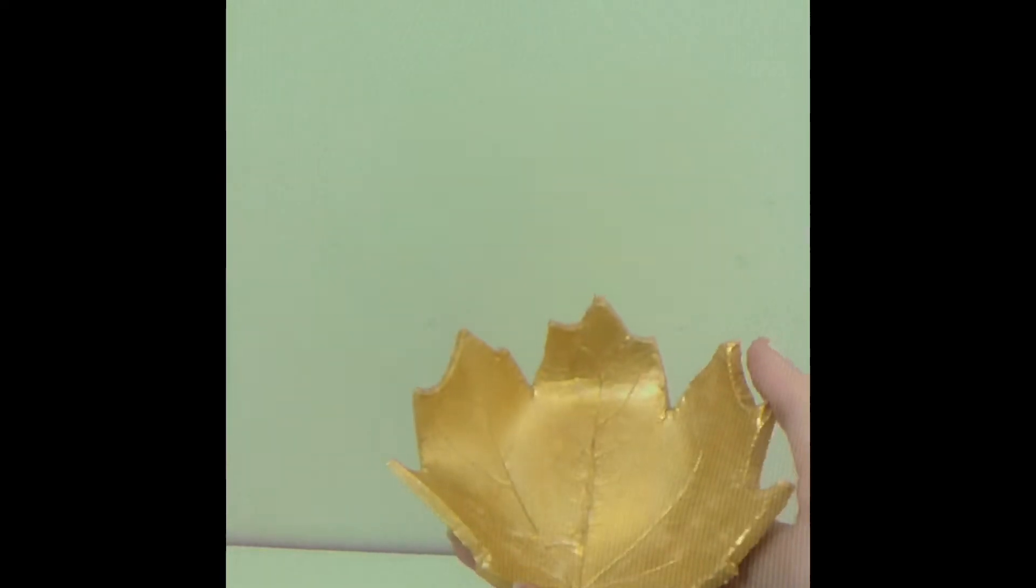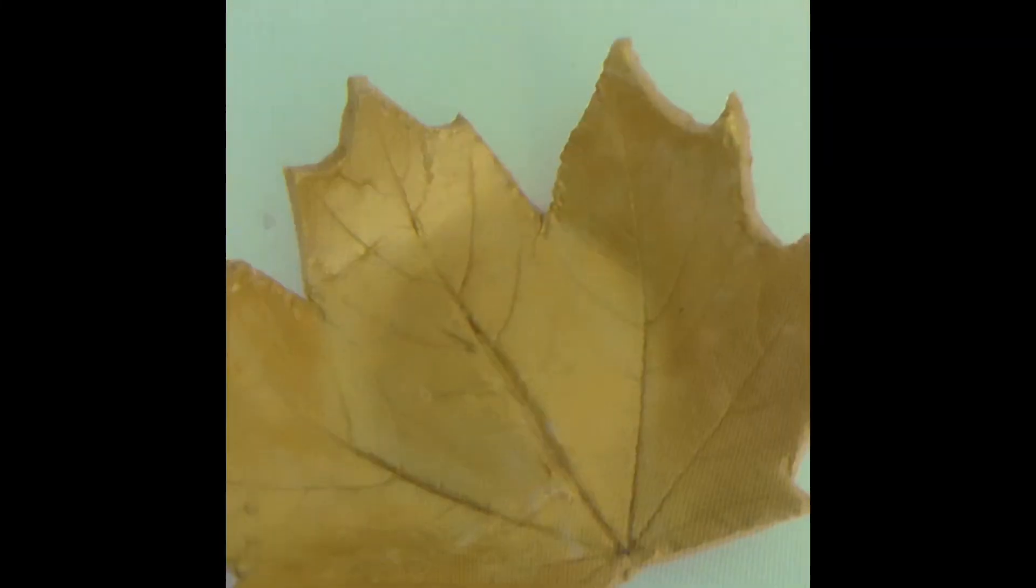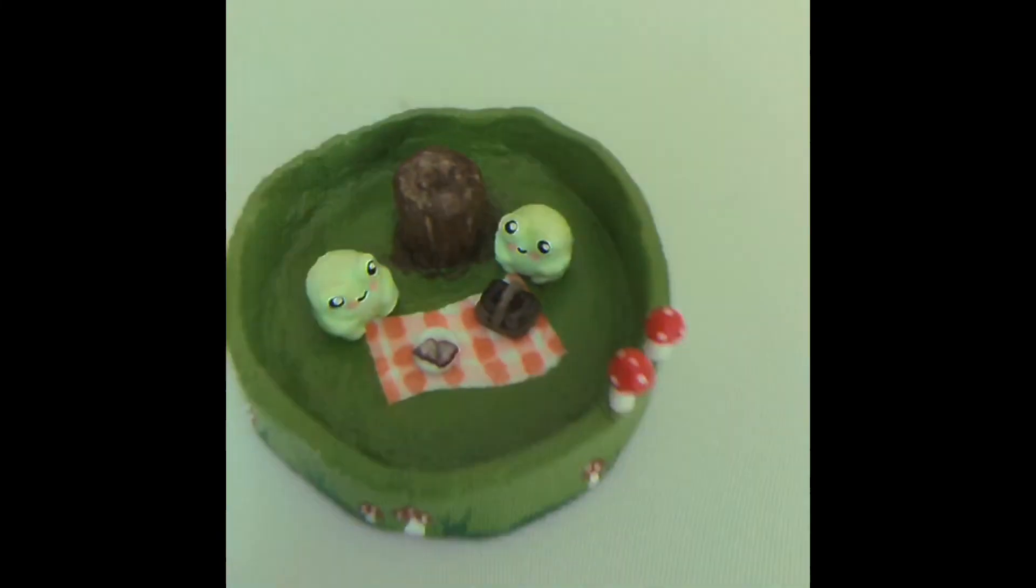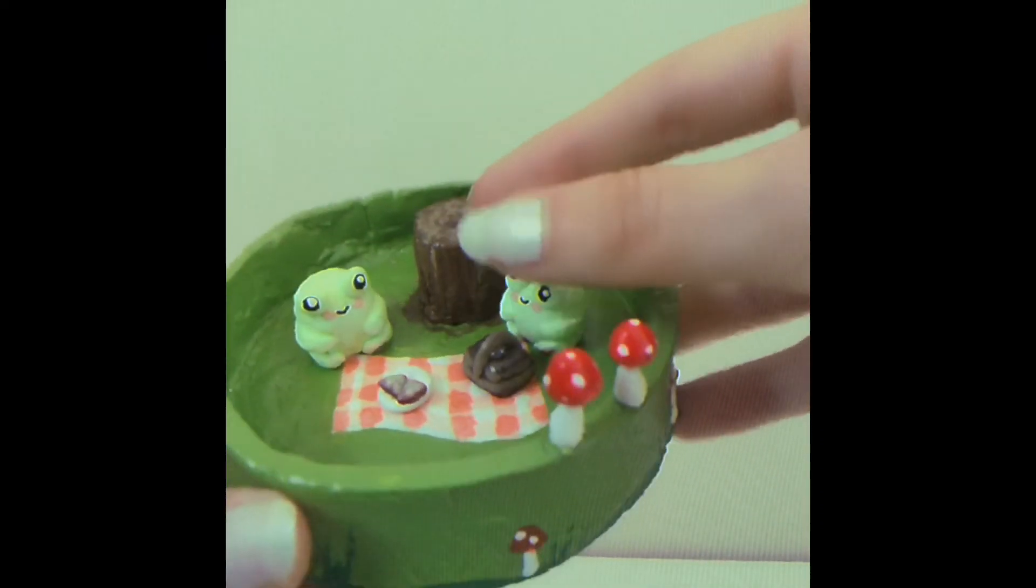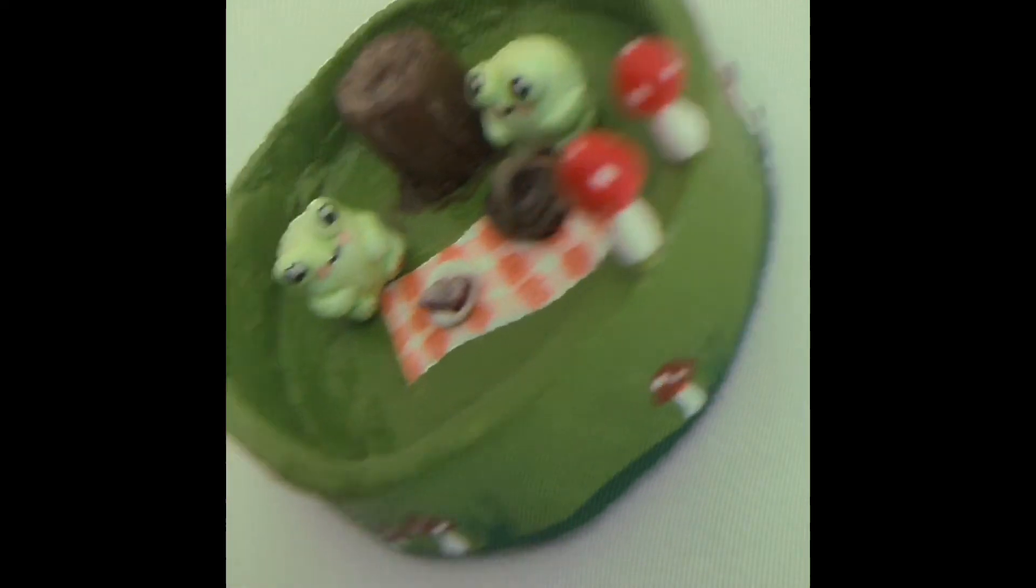Yet another jewelry dish. This one is a gold leaf. I think this is my favorite jewelry dish. It is two frogs having a picnic and it has little mushrooms around the side. This one was the most difficult to make but definitely my favorite.